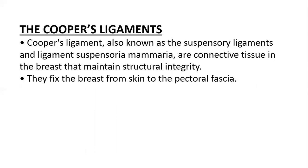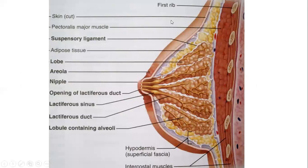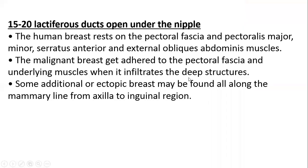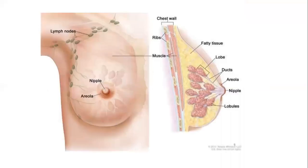Cooper's ligament, also called the suspensory ligament or ligamentum suspensoria mammaria, is the connective tissue that attaches the skin to the pectoral fascia. The human breast is held in its position against the anterior chest wall and is strengthened by Cooper's ligament.